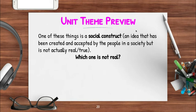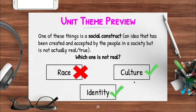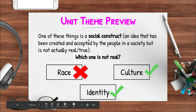One of the three things on the screen — race, culture, identity — is called a social construct, which is an idea that has been created and accepted by the people in a society, but it's not actually real or true. On your note sheet, you're going to place a red X next to the one that you believe is not real. The answer is race. Culture is real, identity is real, but race is actually not real. It's a social construct.